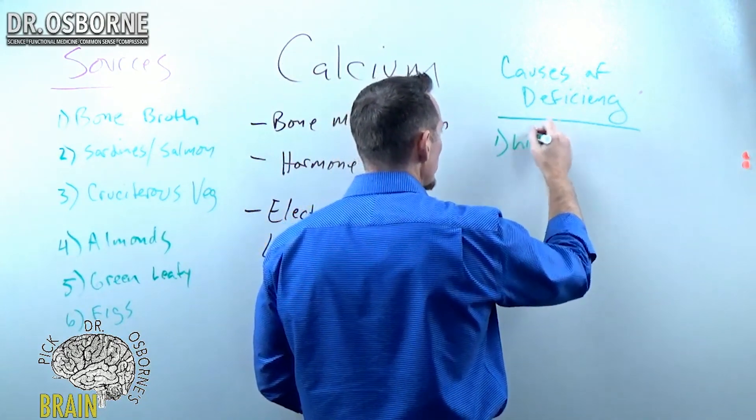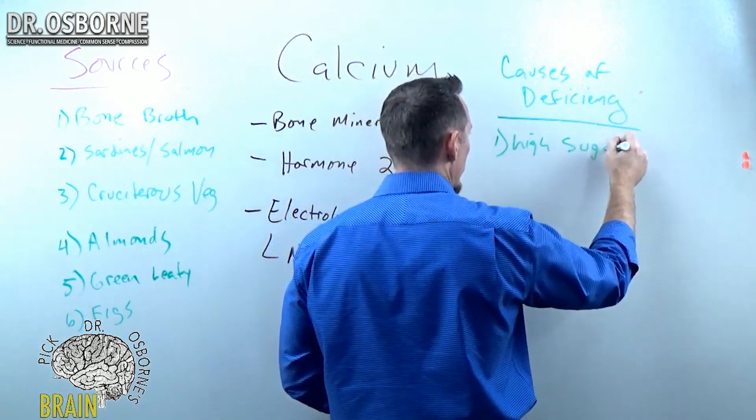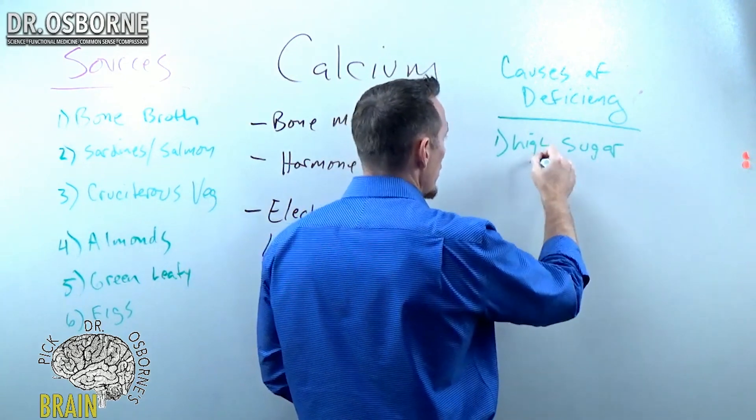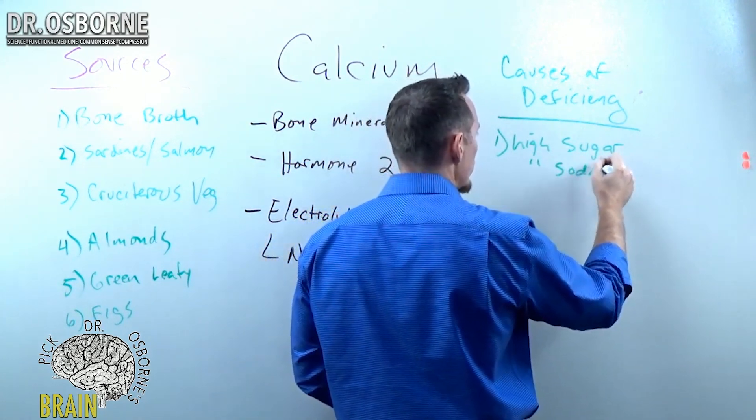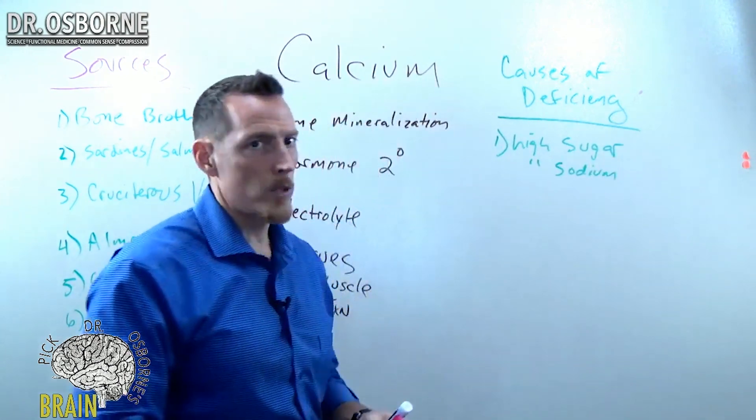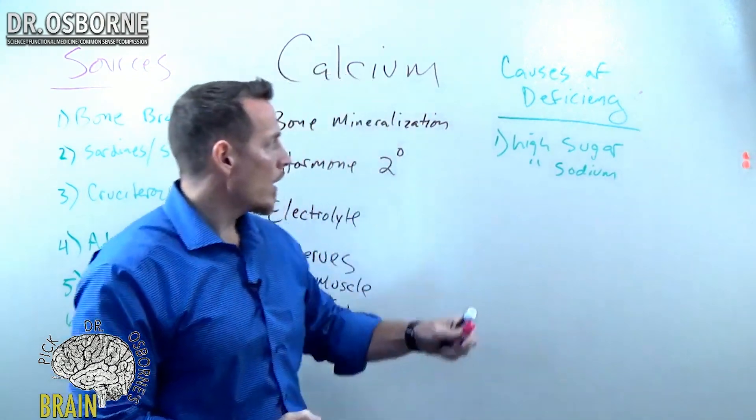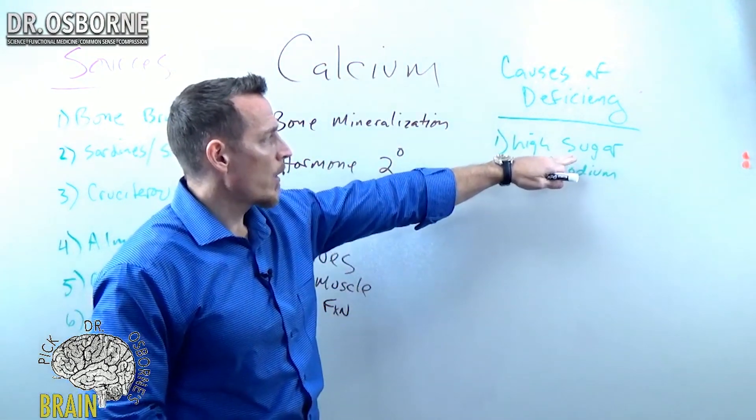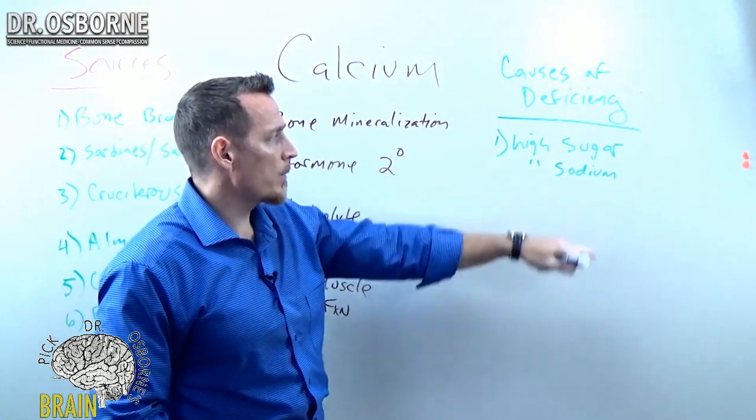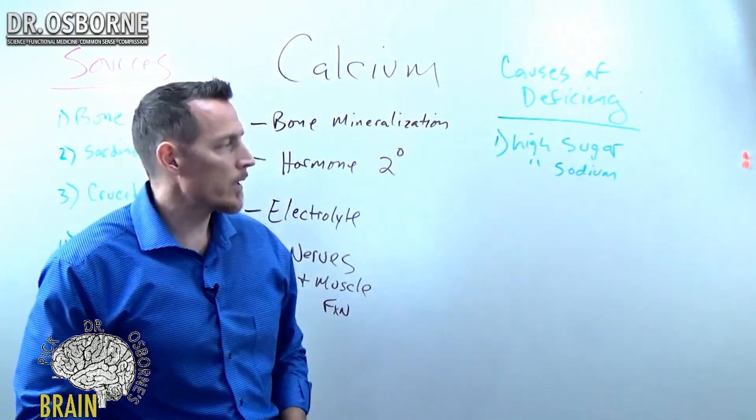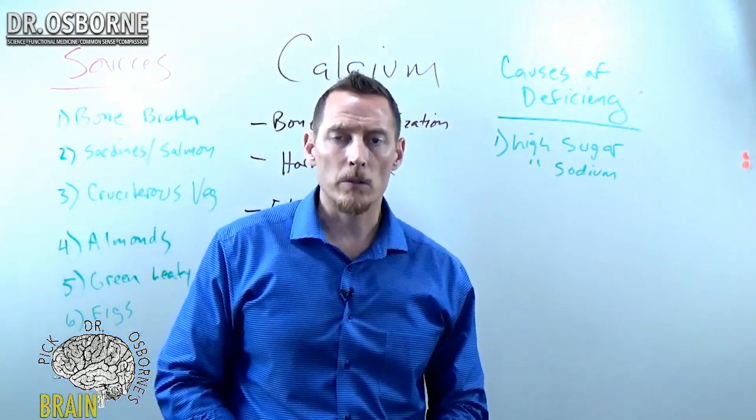High sugar is no good for calcium, but in particular too, it's a high sodium diet. Excessive sodium causes calcium excretion through the kidneys, so if you're the kind of person that eats fast food, processed box food where they add a lot of MSGs and other sodium-based items, that's a quick way to become calcium deficient.